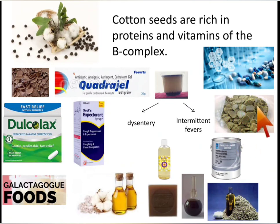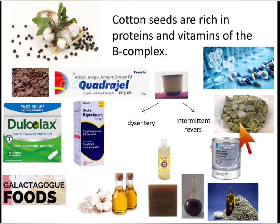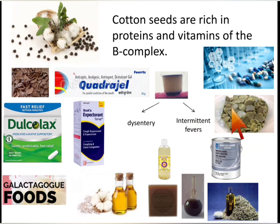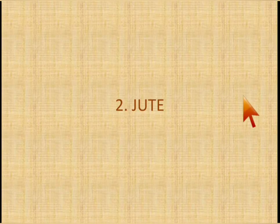The oil cake — the remaining part after extracting oil from the seeds — is an excellent fertilizer and can also be used as stock feed. Now coming to the second plant, that is jute. The botanical name of jute is Corchorus species, belonging to the family Tiliaceae. Its vernacular name is narcha in Hindi and Bengali.